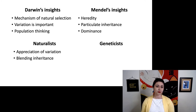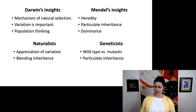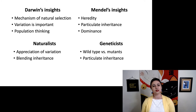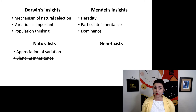Naturalists appreciated variation, but they actually still believed in blending inheritance. Geneticists, on the other hand, had this idea that there was a wild type — the thing you find in the wild — and mutants, the weird stuff you create in the lab by messing with it. We've done a lot of that with radiation, which isn't particularly nice to the cells we do it on, but we've learned a lot. Geneticists also believed in particulate inheritance. We now know that both camps were right in some ways and wrong in others.